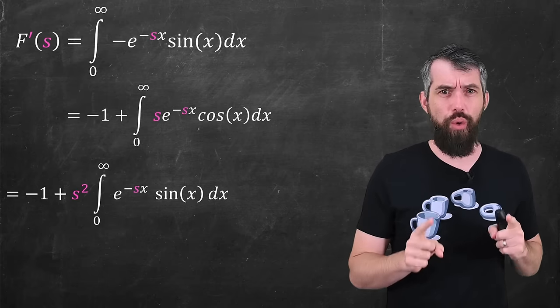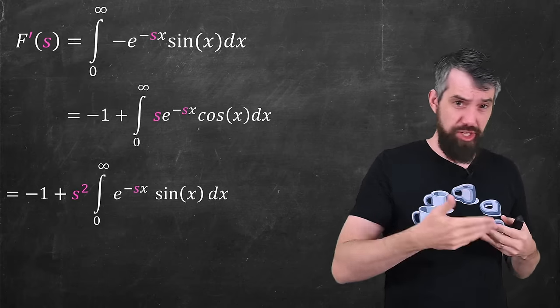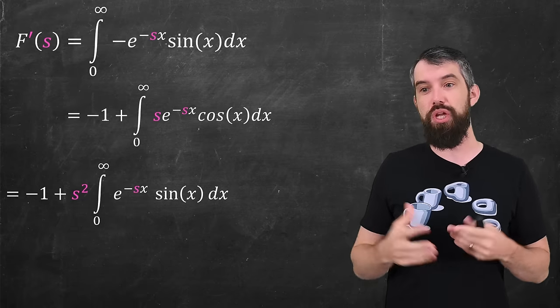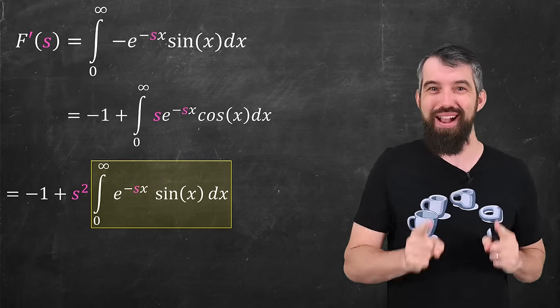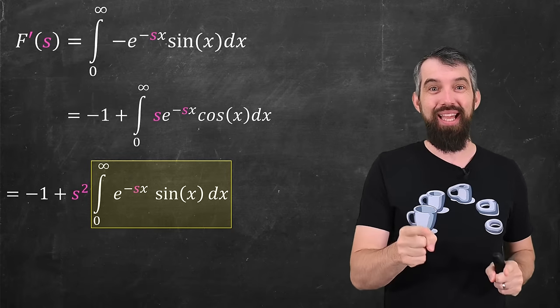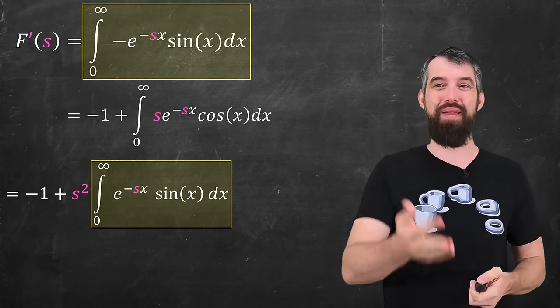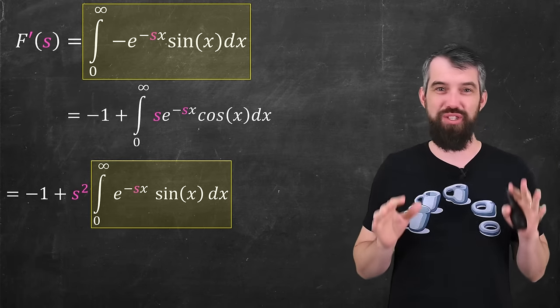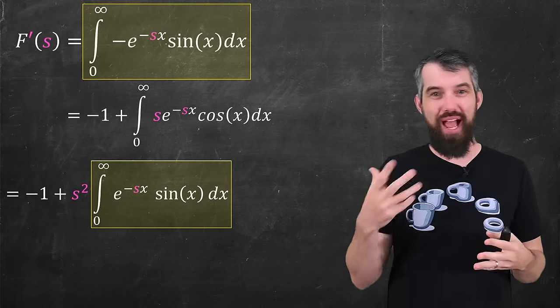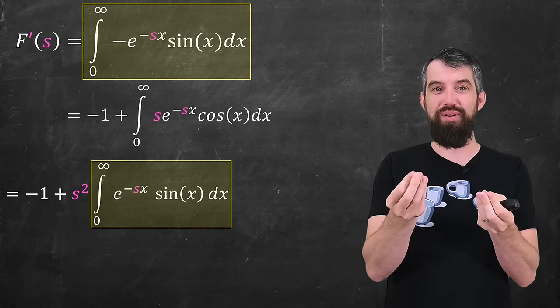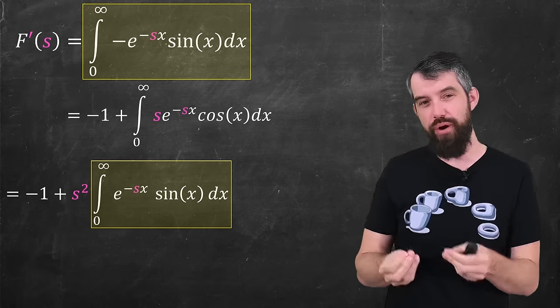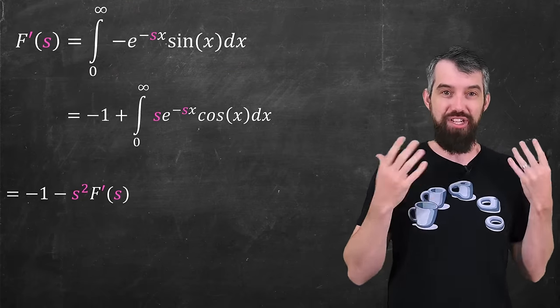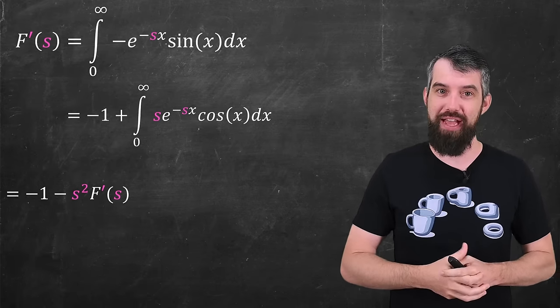I've also pulled out the s squared, which according to our intervals is just a constant. I mean, we know it's a variable, but for an integral with respect to x, it's just a constant. So it comes out the front. And then what I have, well, you should recognize this. This is what I started with. We're right back to where we began. Well, up to a difference of a negative sign. So this is a standard integration by parts twice trick, when you've got sines and cosines going on, where you do two integrations by parts and you get back to what you started with. So this just lets me put in negative f prime of s in place of this big long integral. I just get negative one minus s squared f prime of s.